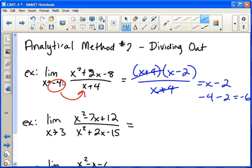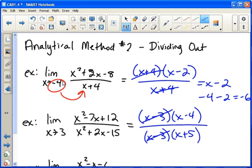What that basically means is you have a hole. So on top here, if we factor, we get x minus three, x minus four. And on the bottom, if we factor, we get x minus three, x plus five. So then cross out the x minus threes.